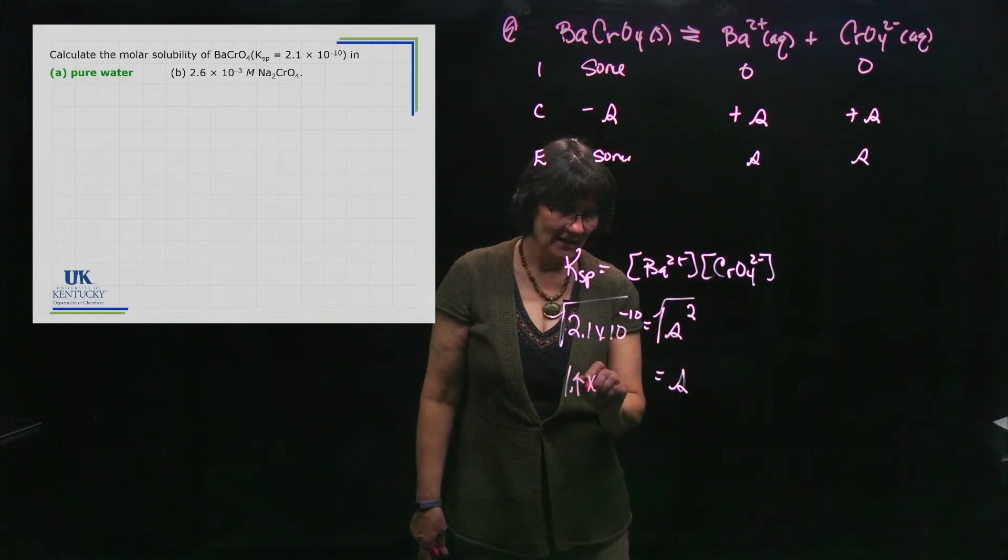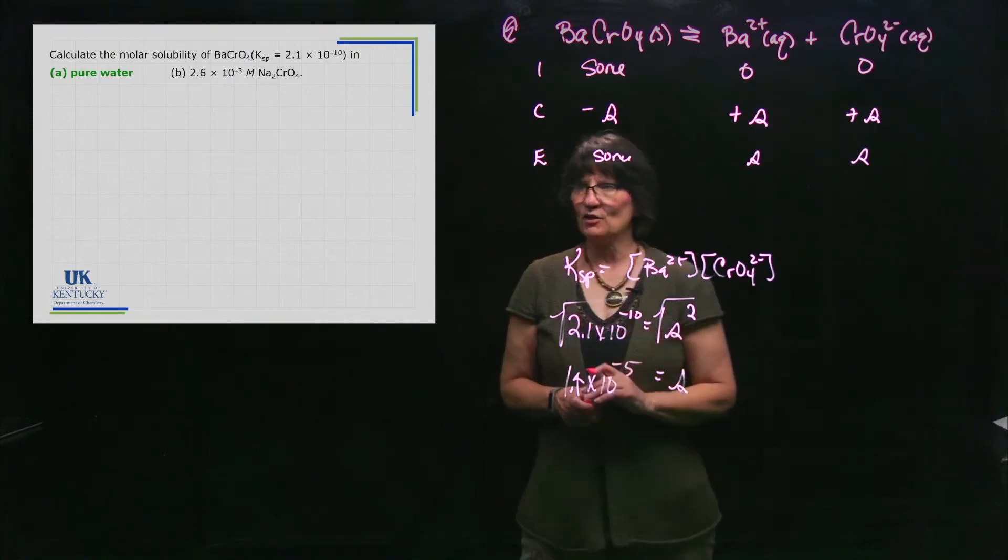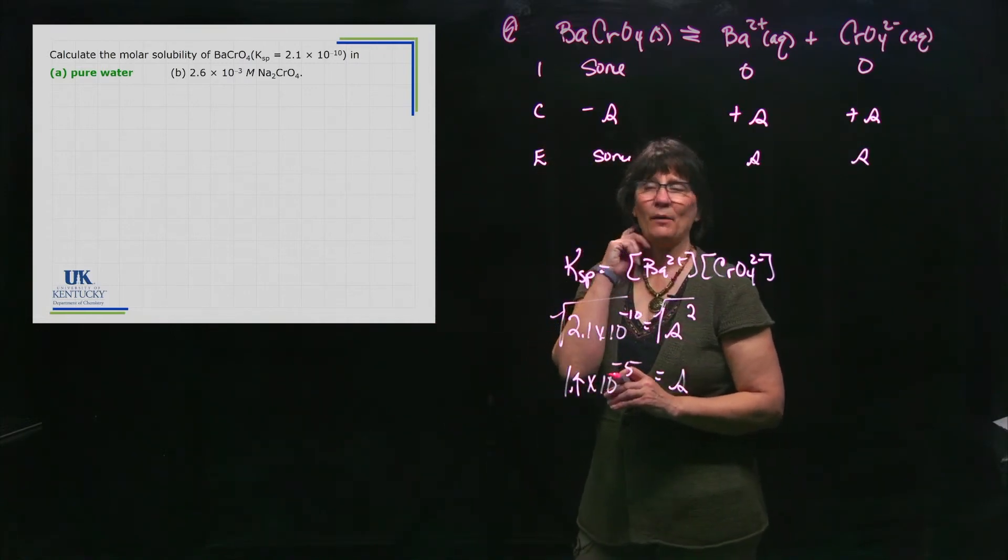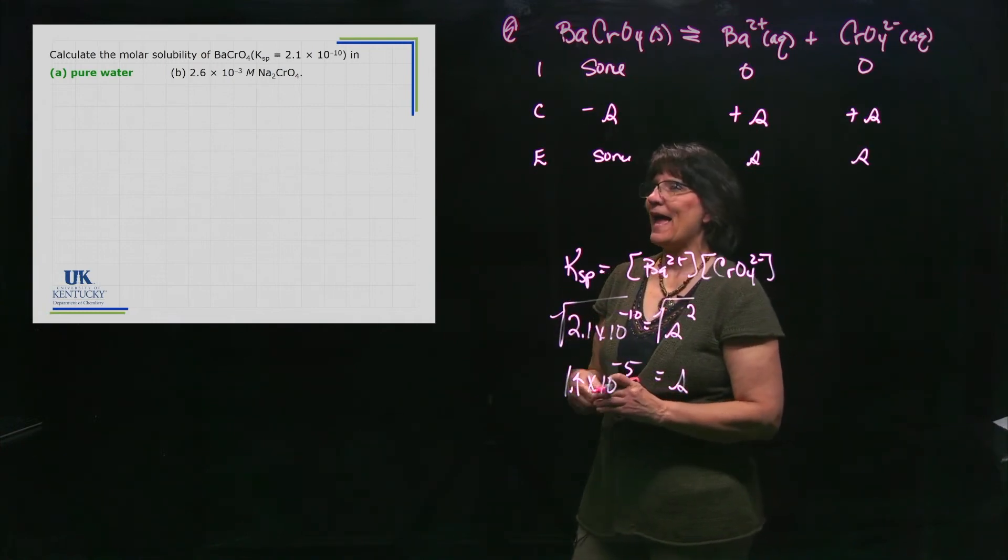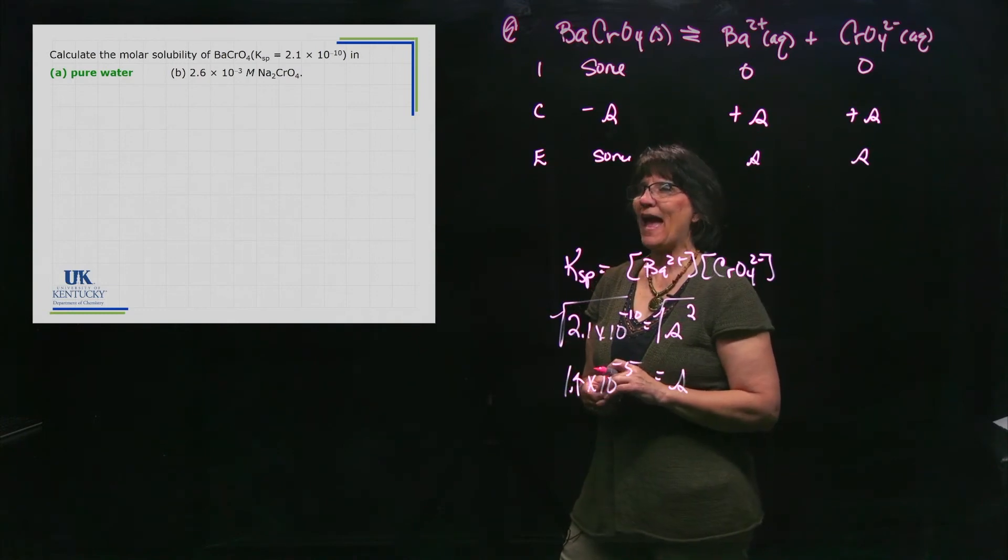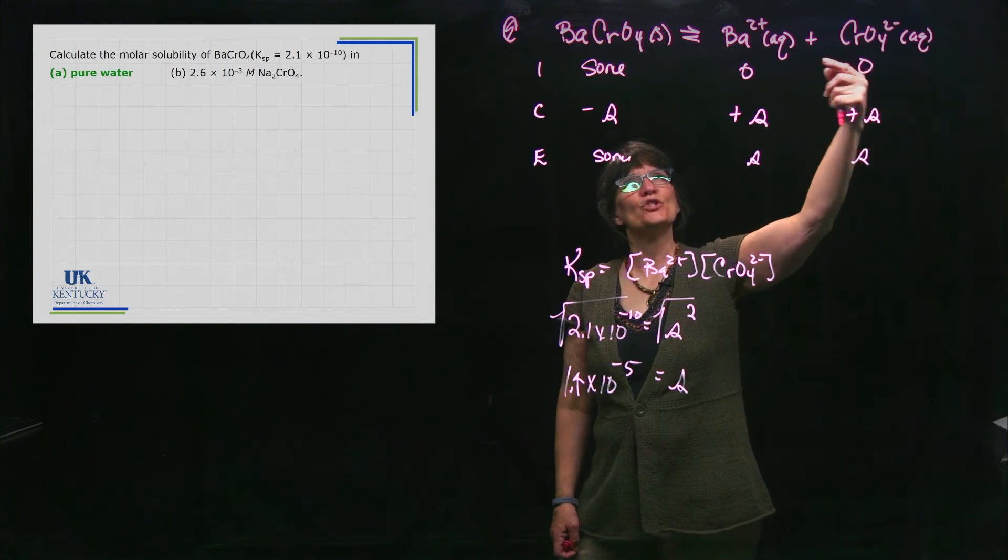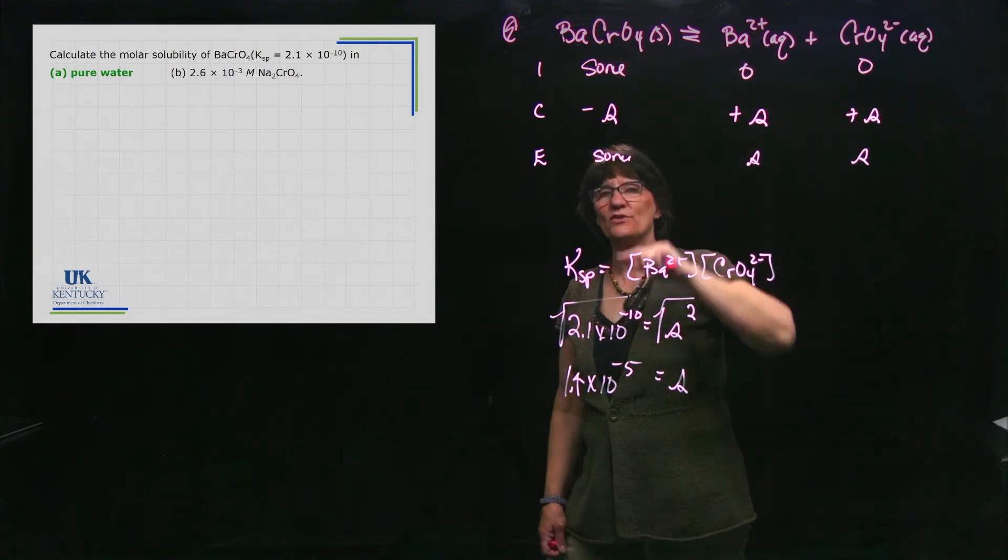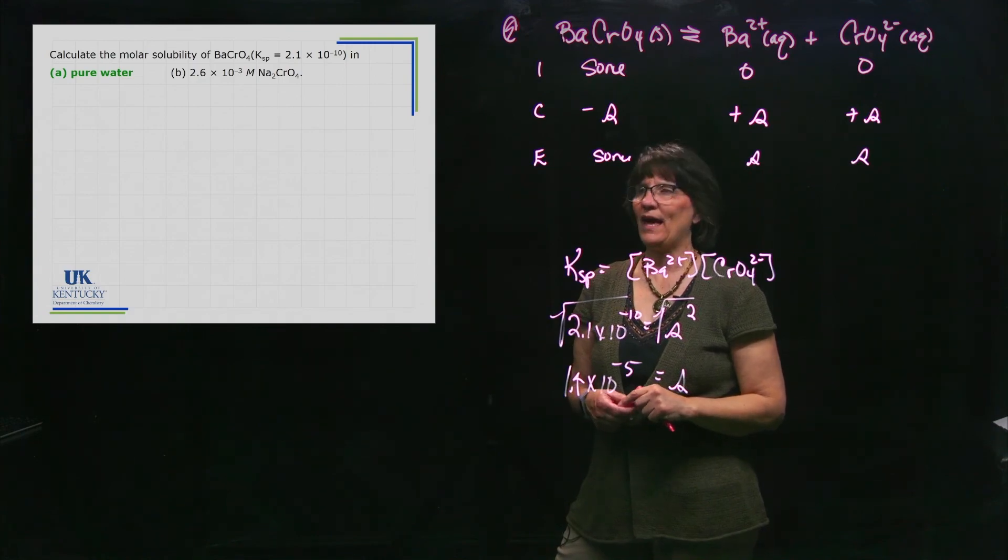Before we leave this problem, let's consider and think about part B. We are adding a common ion by adding sodium chromate, which is soluble. We are going to be adding some of this. When you have this present, it pushes the equilibrium and decreases solubility. So in part B, we're going to see how that happens.